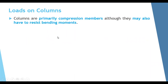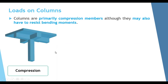About loads on columns: they are primarily compression members, so most columns support compression forces. However, they may also resist some bending moments. For example, when a column supports symmetrical beams from all sides — as in the case of internal columns with equal spans — it carries mainly axial compression force.